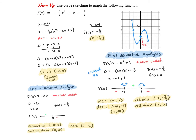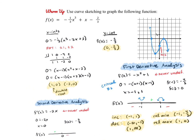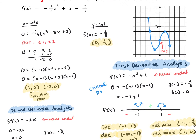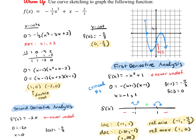Go ahead and check your work here. You can see the work with our original function, finding the x-intercepts and the y-intercept. You do need to use the rational root theorem to find one of your zeros, and then the remaining polynomial is factorable.